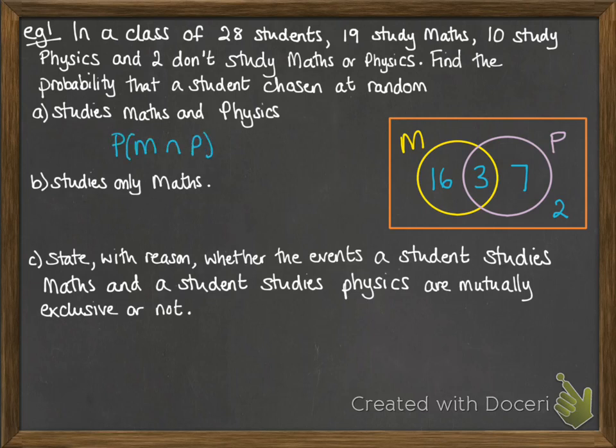So the probability of studying maths and physics is the intersection. That's 3 out of 28. Then the notation for studying only maths would be the intersection of maths and not physics. Remember that little dash at the top means not physics. It's the complement of physics. So that reads as the probability of maths and not doing physics. So that would be the 16 out of 28.